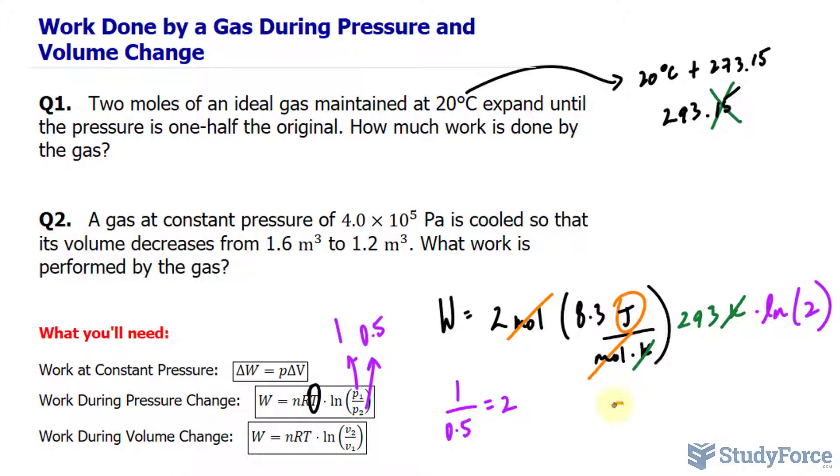In question 2, they ask, a gas at constant pressure of 4.0 times 10 to the power of 5 pascals is cooled so that its volume decreases from 1.6 meters cubed to 1.2 meters cubed. What work is performed by the gas?